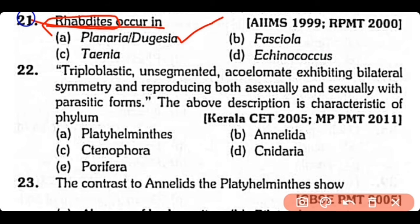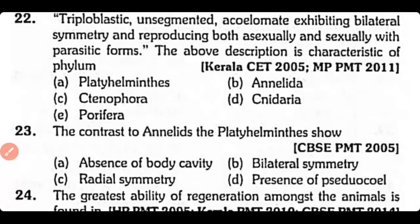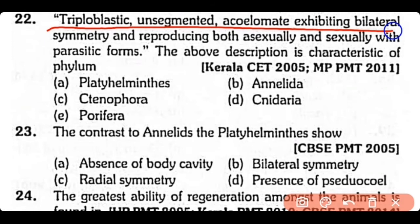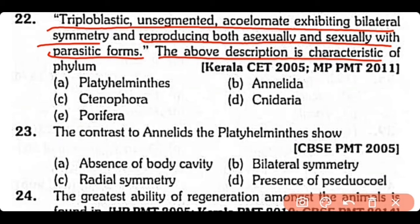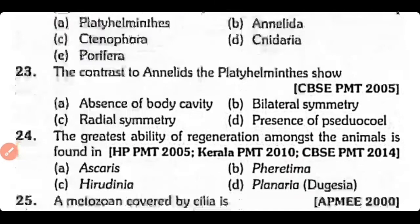Question no.22. The triploblastic, unsegmented, acoelomate exhibiting bilateral symmetry and reproducing both asexually and sexually with parasitic forms — the above description is the characteristic of phylum Platyhelminthes. The correct answer is option A.